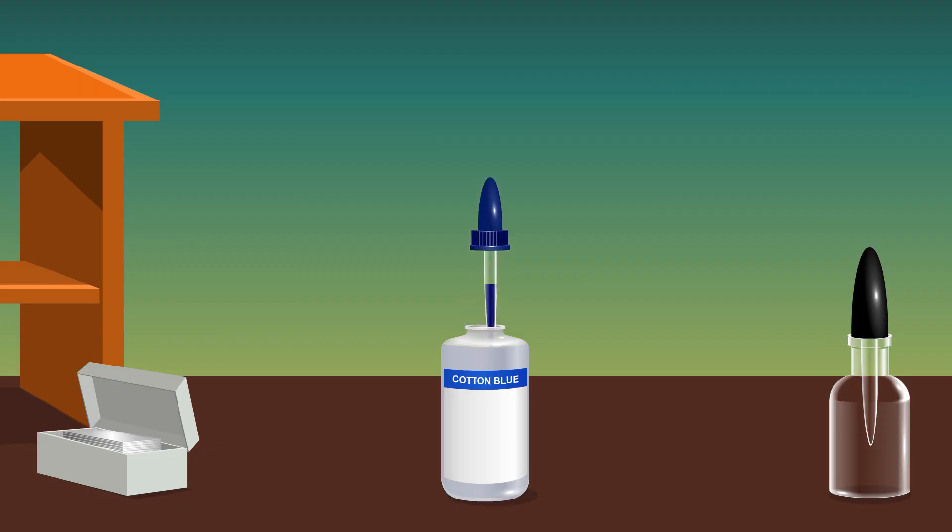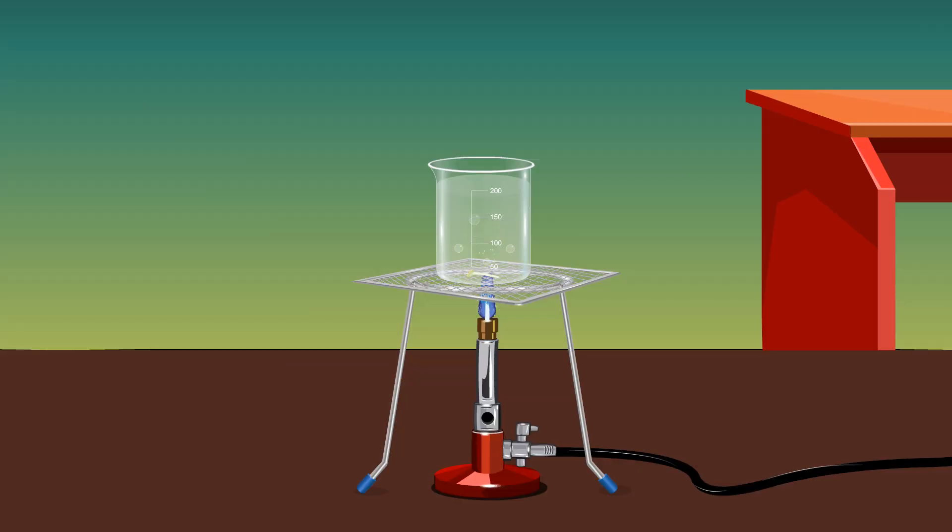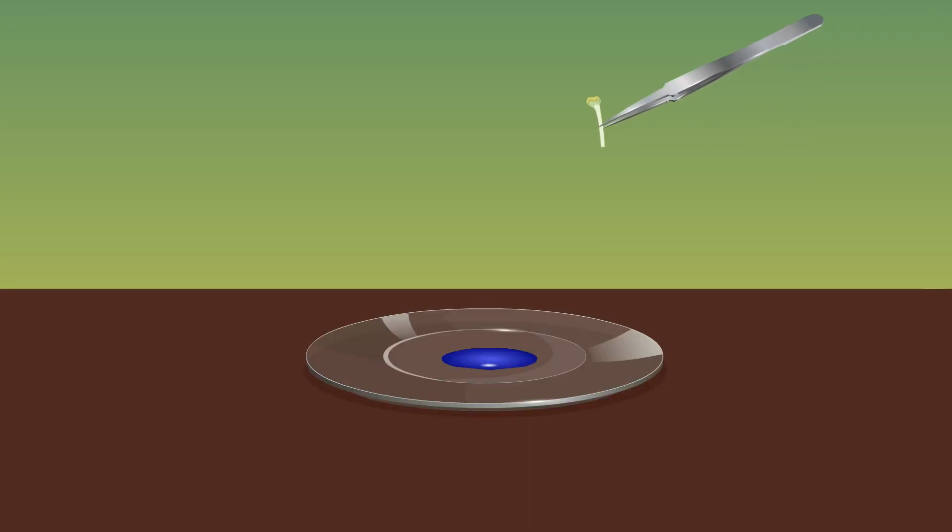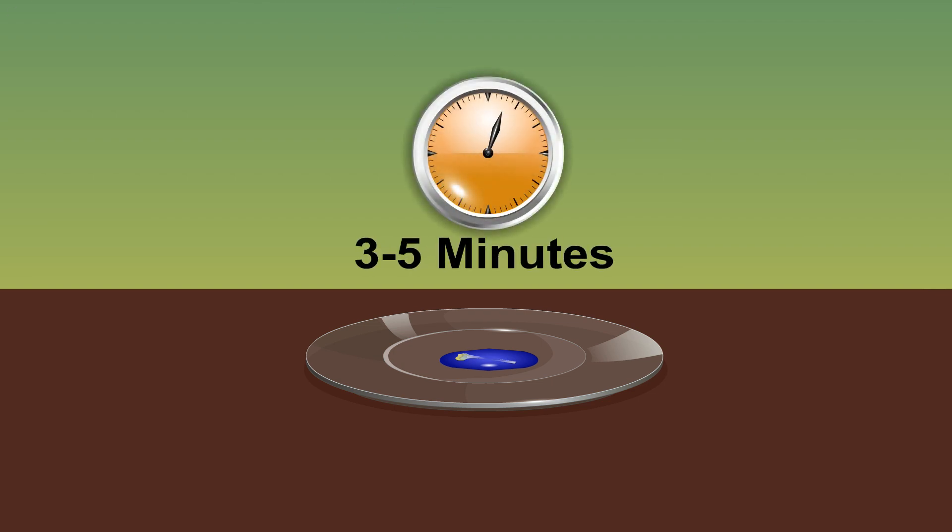Take a few drops of cotton blue solution in a dropper and transfer it into a watch glass. Using forceps, transfer the stigma into the watch glass containing the cotton blue solution. Let this remain in the stain for 3 to 5 minutes.